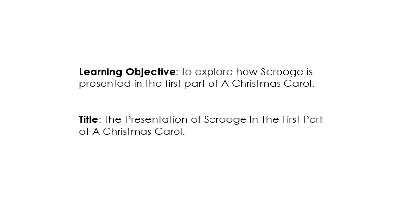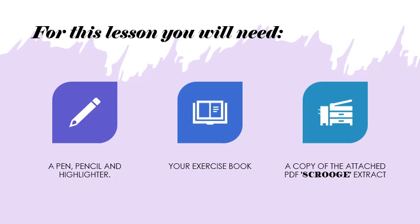Our learning objective today is to explore how Scrooge is presented in the first part of A Christmas Carol. The title that goes into your books is 'The Presentation of Scrooge in the first part of A Christmas Carol.' For this lesson you're going to need a pen, a pencil and a highlighter, your exercise book and a copy of the attached PDF Scrooge extract, which is attached to Class Charts.